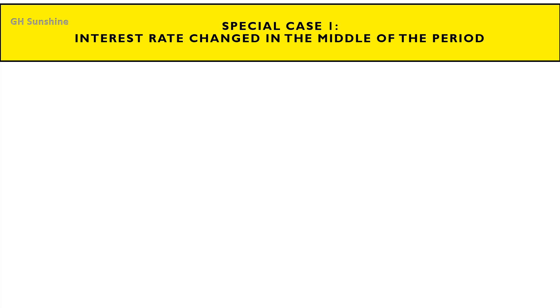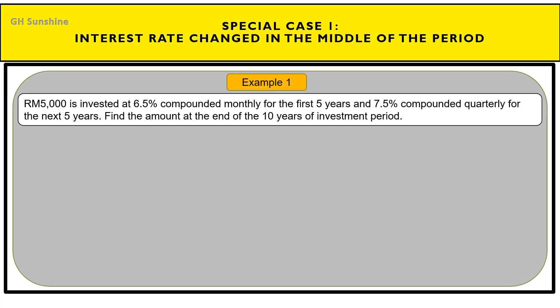Focus on the first special case: interest rate change in the middle of the period. Look at this example. RM5,000 is invested at 6.5% compounded monthly for the first 5 years and 7.5% compounded quarterly for the next 5 years. Find the amount at the end of the 10-year investment period. The interest rate for the first 5 years is 6.5% and the rest is 7.5% — meaning the interest rate changes in the middle of the period.